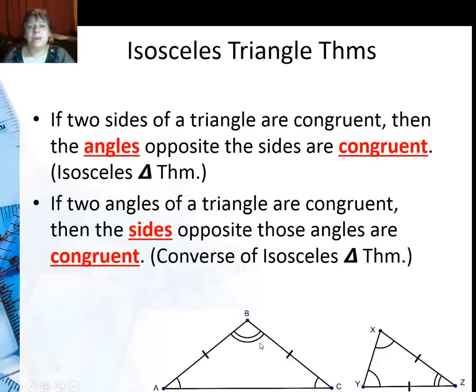And then we have the converse, which says if two angles of a triangle are congruent, then the sides opposite those angles are congruent. Again, pretty much saying the same thing just in the other direction.